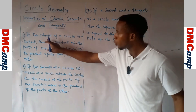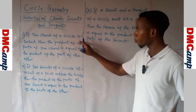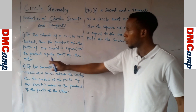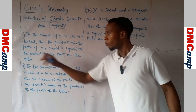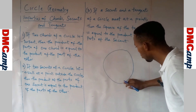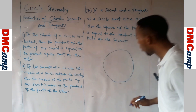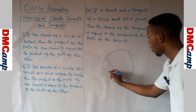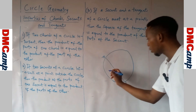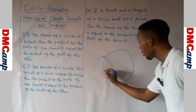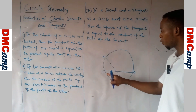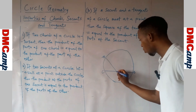This property says: if two chords of a circle intersect, then the product of the parts of one chord is equal to the product of the parts of the other. What they are trying to say is that if you have a circle with two chords — chord AB and chord CD — and these two chords cross each other, the point where they cross is the point of intersection.